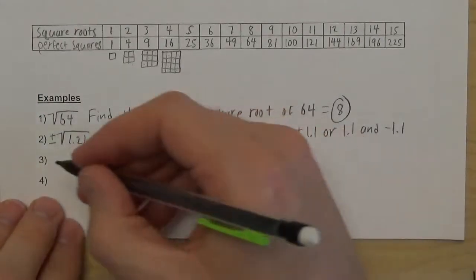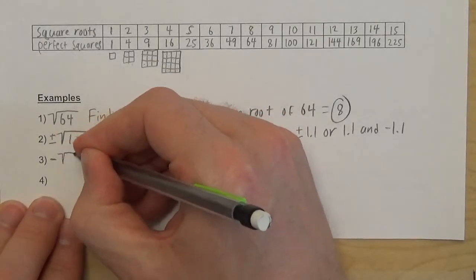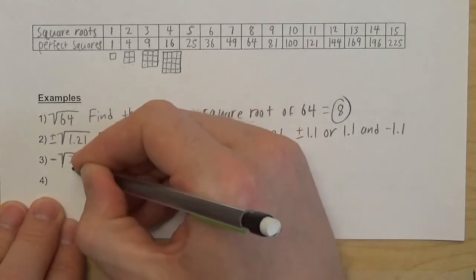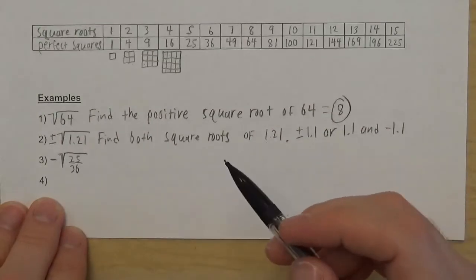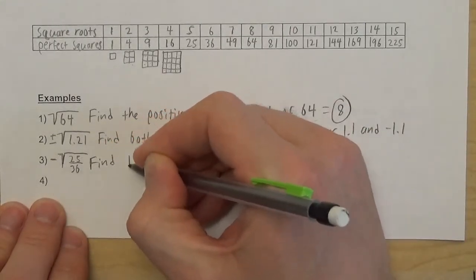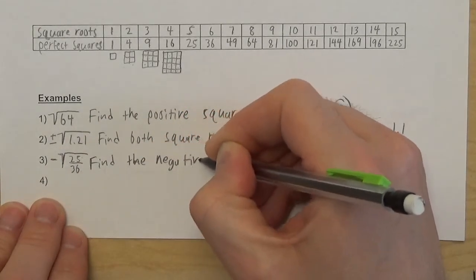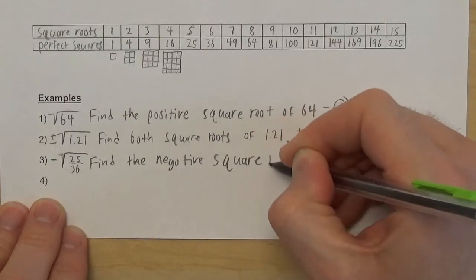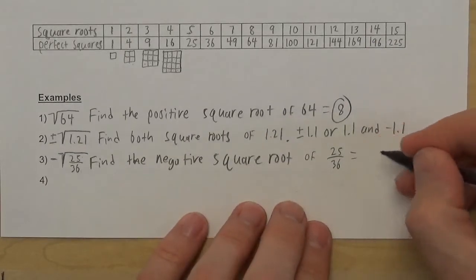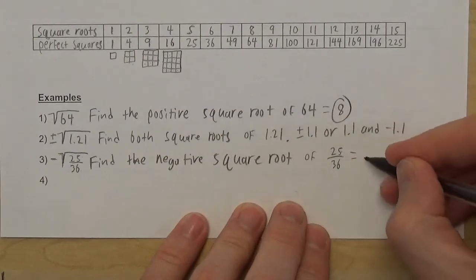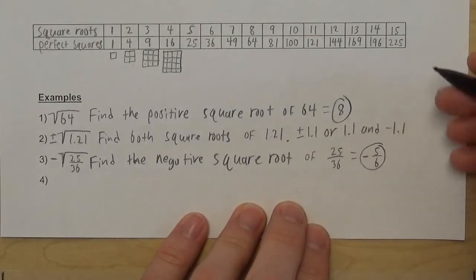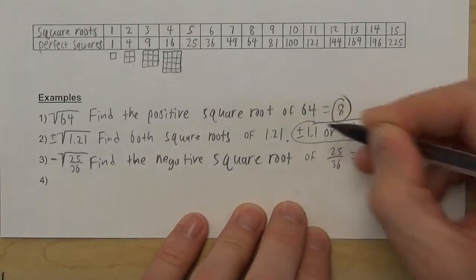Sometimes you'll see just a negative sign in front of the radical — that's asking for only the negative square root. For example, the negative square root of 25 over 36: to find the square root of a fraction, take the square root of the numerator and the square root of the denominator separately. The square root of 25 is 5, and the square root of 36 is 6, so the answer is negative 5/6.